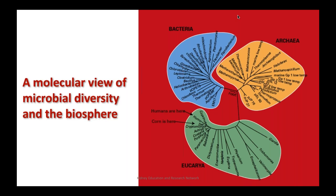What this allows us to do is look at a molecular view of microbial diversity in the entire biosphere. If you look at the organisms, you can divide them into three broad groups: bacteria, archaea, and eukarya. Eukarya are eukaryotes with a well-defined cell membrane, and here you have the homo genus, which includes homo sapiens. In the entire microbial diversity of the biosphere, we are very close to fungi, which are also eukaryotes.